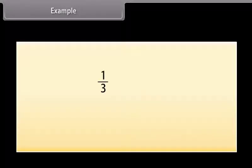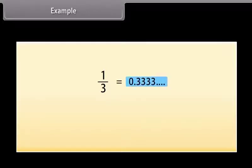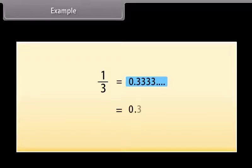Let us now have a look at one example. 1 by 3 is a rational number. The decimal expansion of 1 by 3 is 0.33333... and so on. We can see that 3 is repeating here. We write it as 0.3 bar.